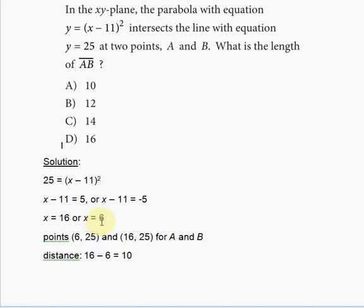So in other words, two points for A and B are 6 comma 25 because that's the x value and 16 comma 25. And why is it the same y value? Because this is what we had originally. We had originally set the y values equal, so this means that the y values must be the same.